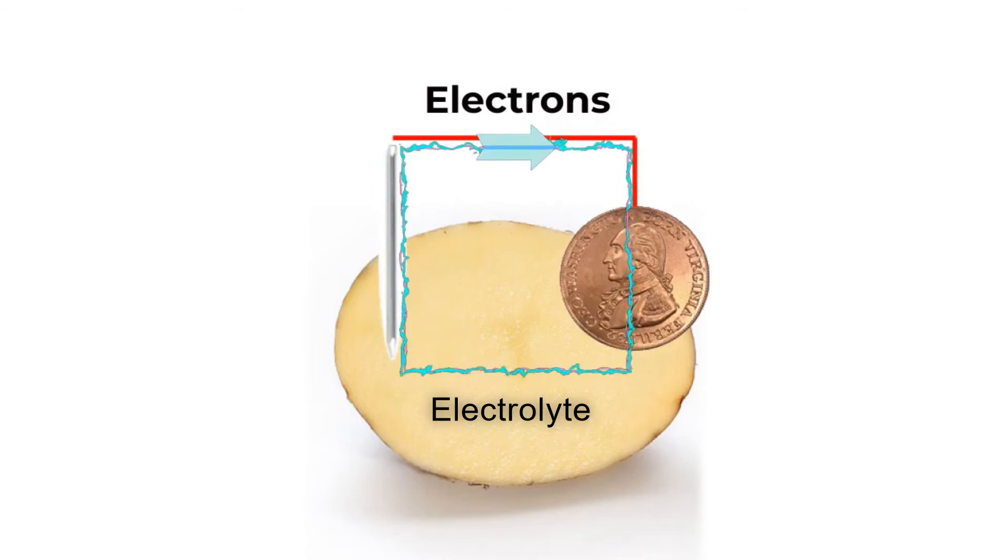This is because our potatoes are slightly acidic and react with the metals releasing electrons. The copper attracts electrons to it more easily than zinc, causing the electrons in the potato battery to flow from the zinc electrode, also called the anode, to the copper electrode, also known as the cathode.